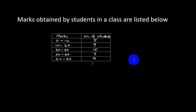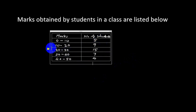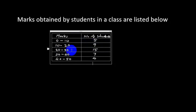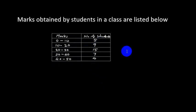Suppose there are 40 students in a class and their marks are distributed in a grouped frequency table: 5 students score in the range 0 to 10, 9 students score in the range 10 to 20, 15 students in the range 20 to 30, and so on. We need to find the average of this data. To do so, we have to make some assumptions, as we cannot proceed exactly as in the former case.